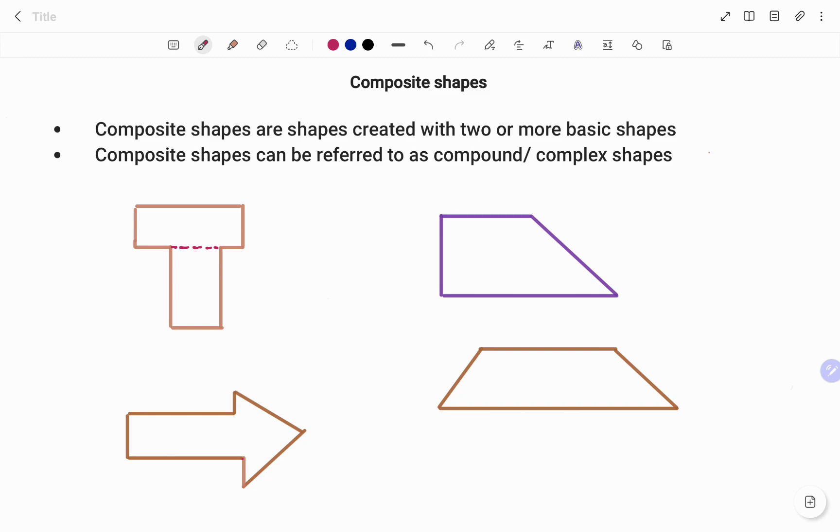In the second example, if we draw an invisible line and break the shape up, we're going to see that we have a square, that's the first shape, and a triangle, that's the second shape.